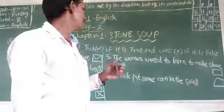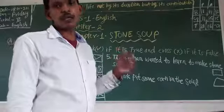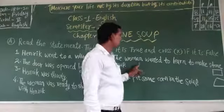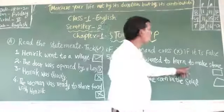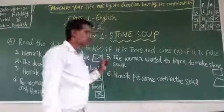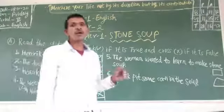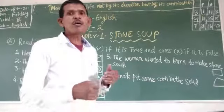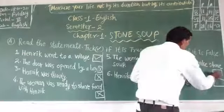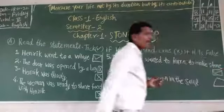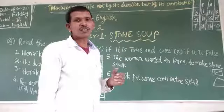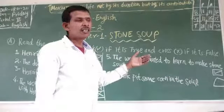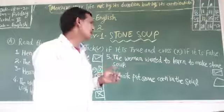Now we will see statement five. Let's read: 'The woman wanted to learn to make stone soup.' Yes, the woman wanted to learn stone soup from the boy, and this is right, so we will put a tick mark here.